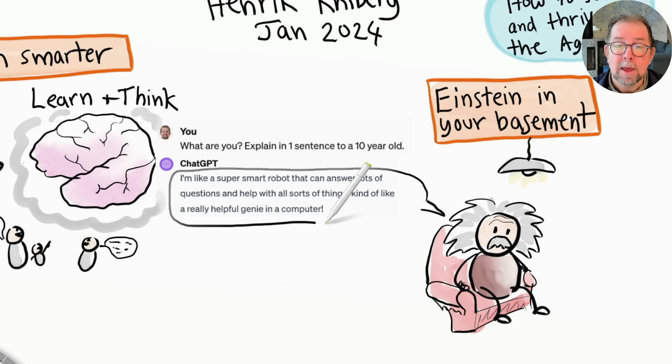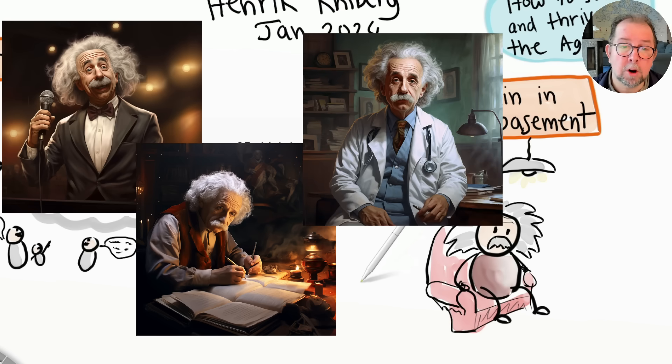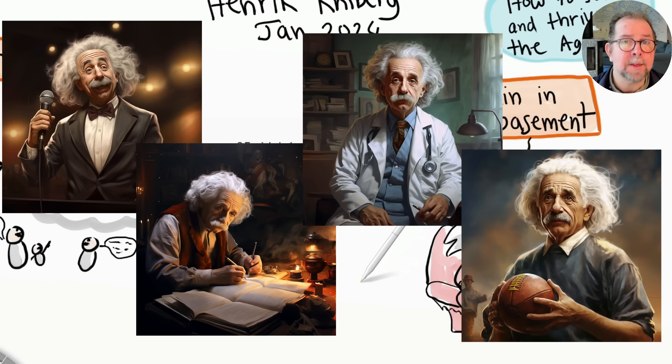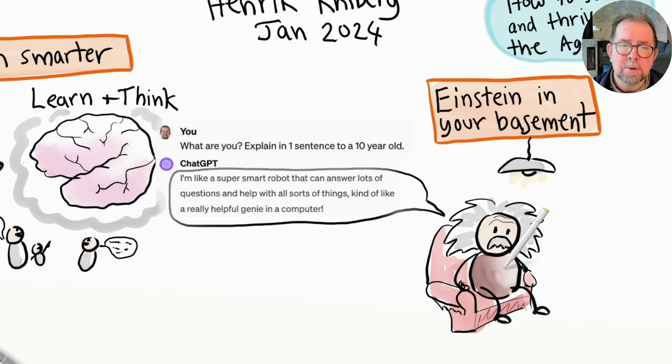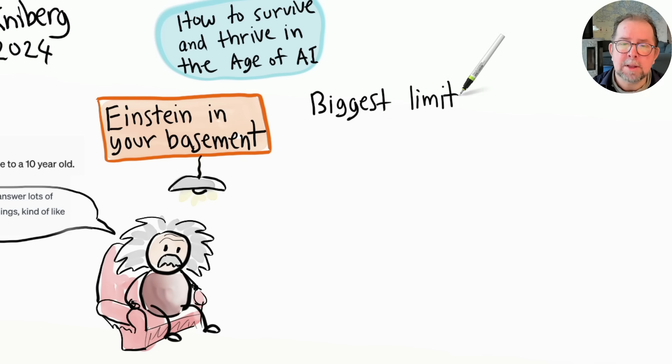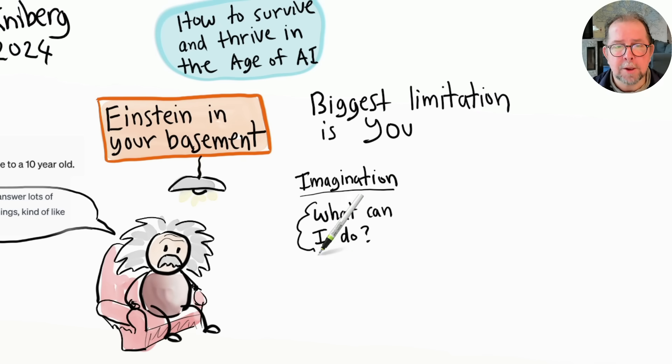He can also take on any role you want—a comedian, poet, doctor, coach—and will be an expert within that field. He has some human-like limitations though. He can make mistakes, he can jump to conclusions, he can misunderstand you. But the biggest limitation is actually your imagination and your ability to communicate effectively with him.